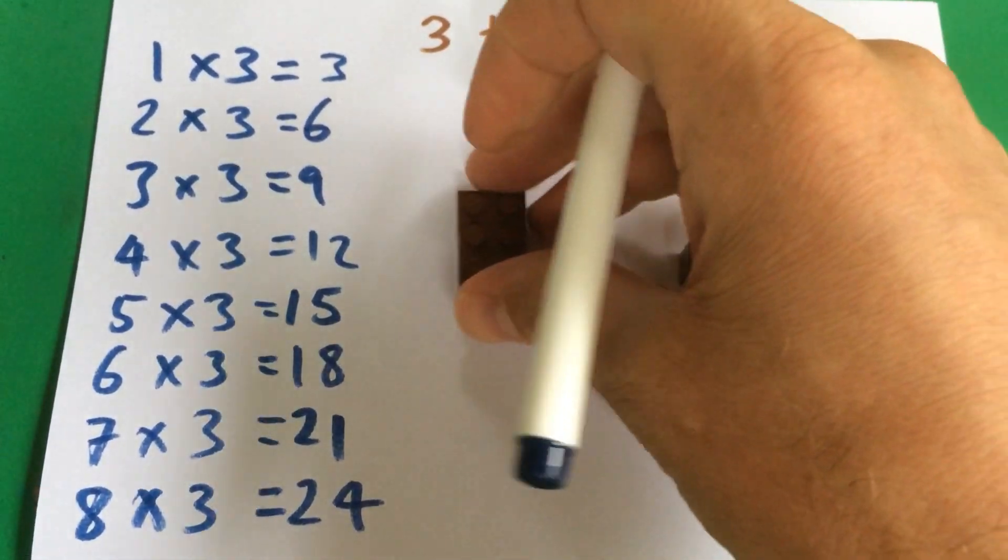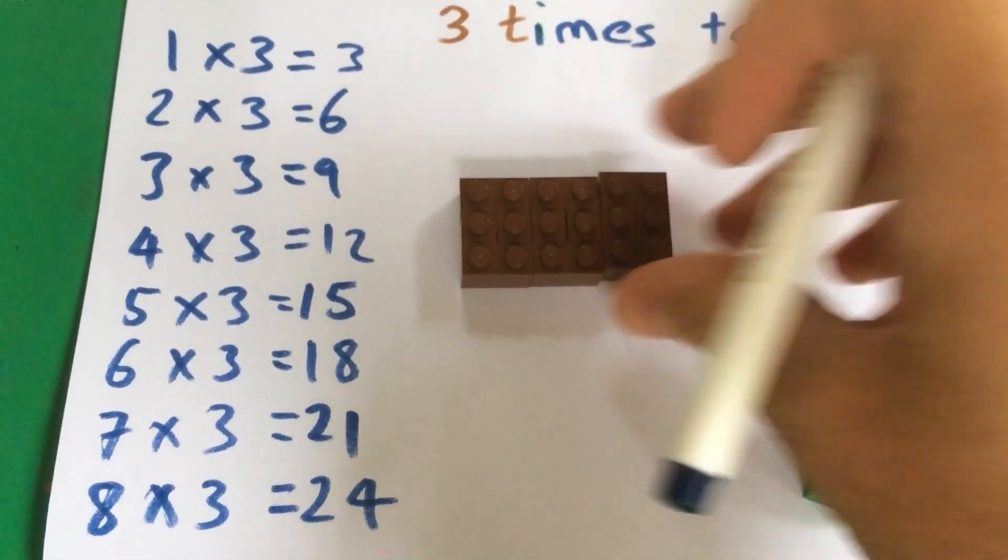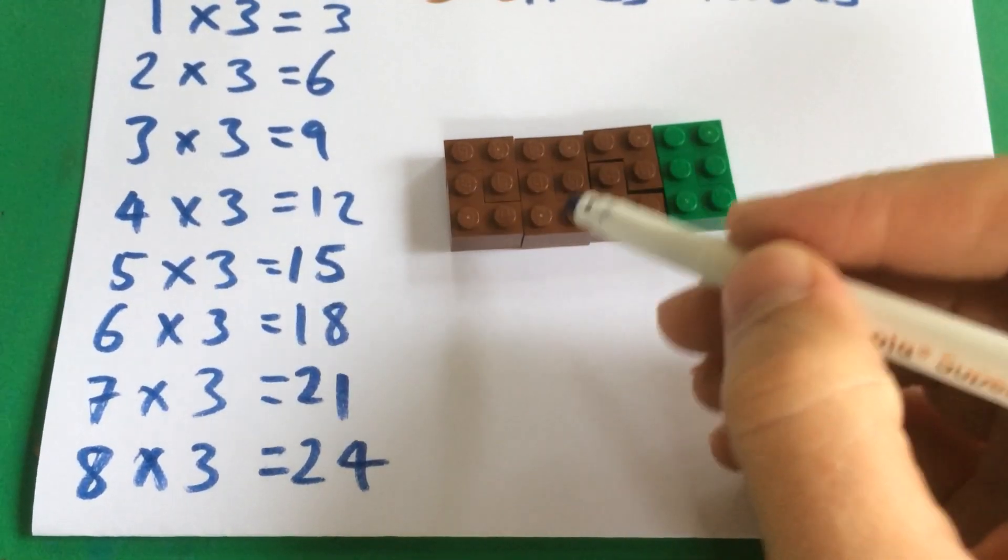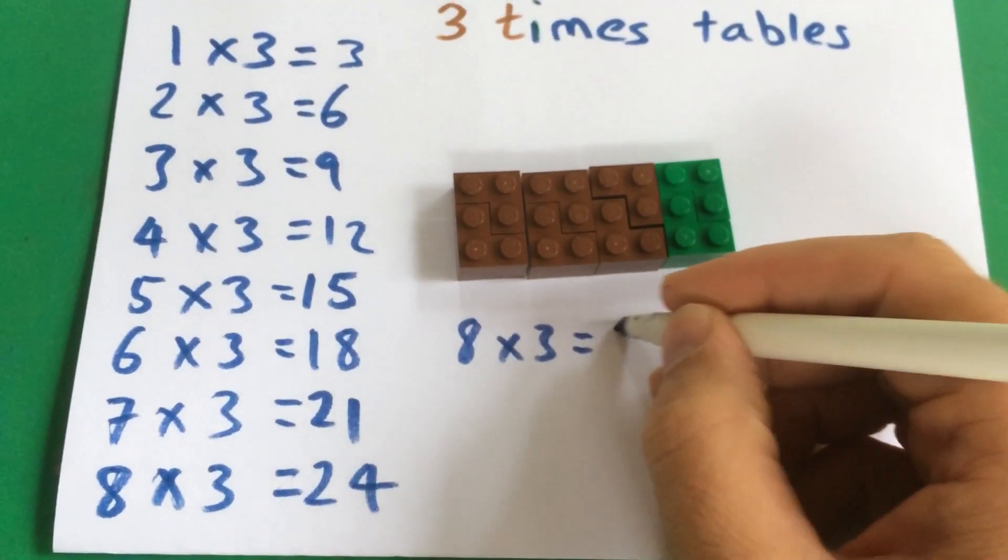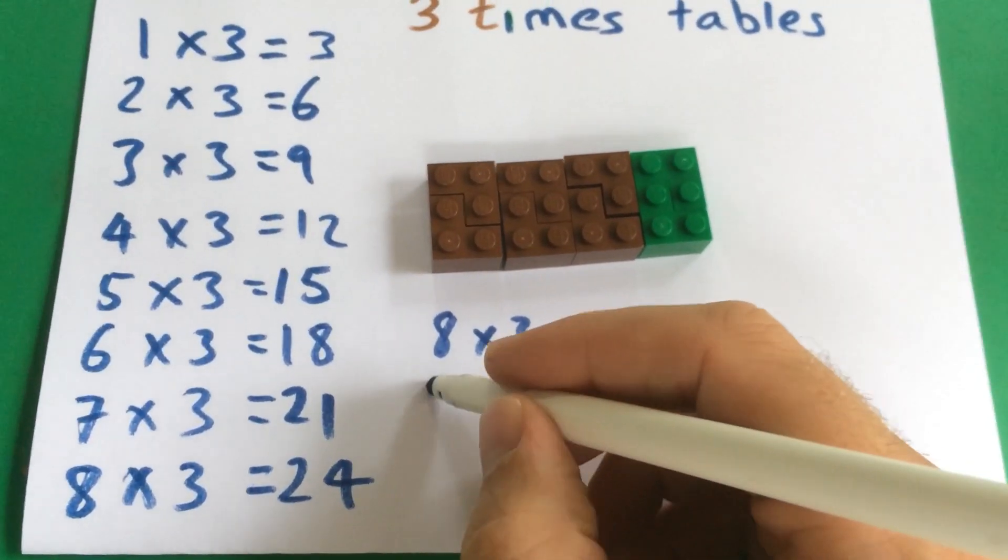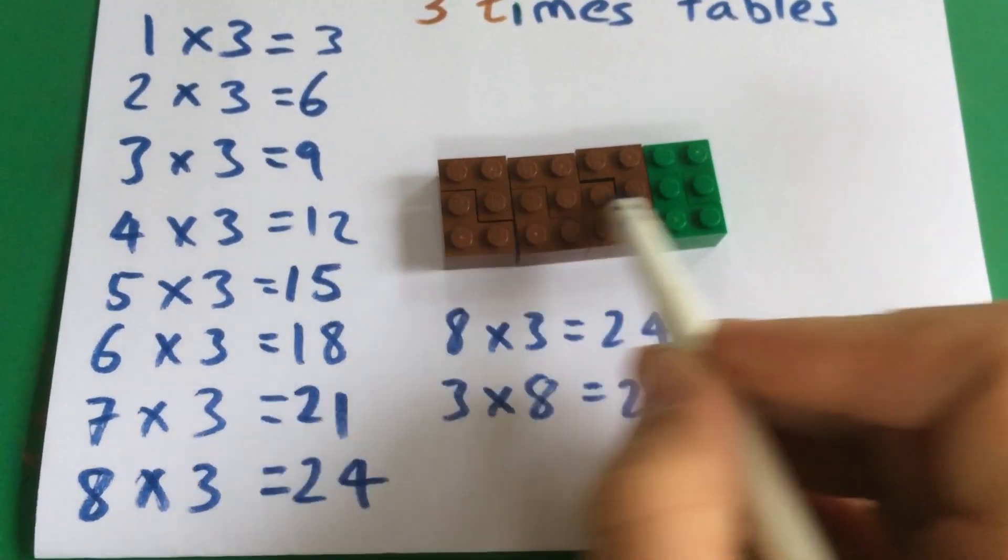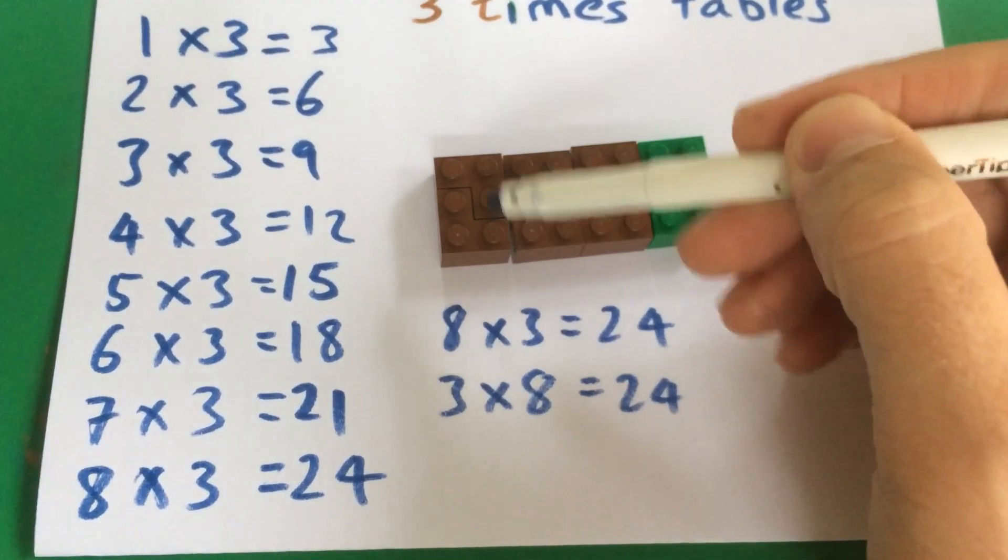And now if we put those all nicely we can see the wonder of multiplying. If I've got 8 lots of 3, or 8 rows of 3, 8 rows of 3 is 24, but also 3 lots of 8 is also 24. So I could have 3 rows each of 8, or 8 columns all of 3, and they both give me 24.